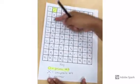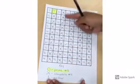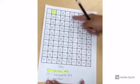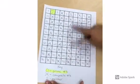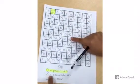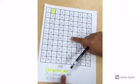Now that you've finished crossing out the multiples of two, notice that these are all composite numbers.